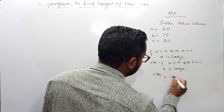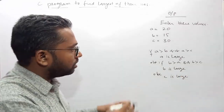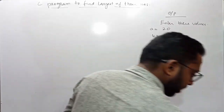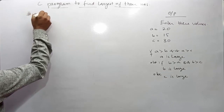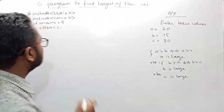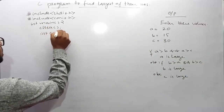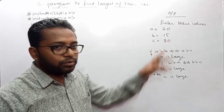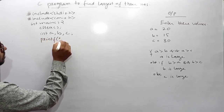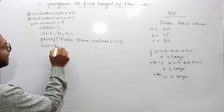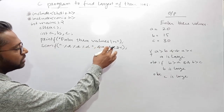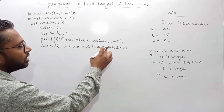So this is the logic I'll use to find the largest of three numbers. Now let me write the program. I'll start with the header files and clrscr function. I declare three integer variables: int a, b, c. To accept the three values, I use printf to display a message, then scanf with three %d format specifiers and &a, &b, &c. So 20, 15, and 30 get stored in a, b, and c respectively.